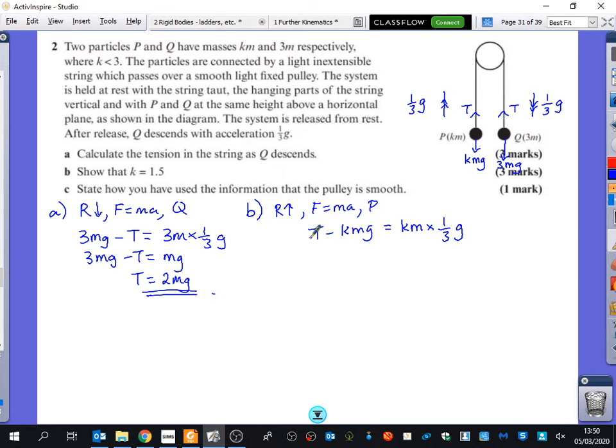Now, I don't know what the tension is. I also don't know what K is. Oh, hang on. I do know what the tension is, don't I? The tension I've just worked out is 2MG. So I get 2MG minus KMG equals a third. And I'm going to just write it in the same order, KMG. What can I do everywhere here?